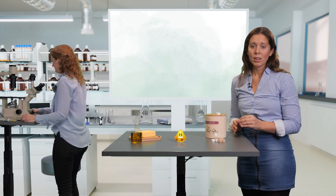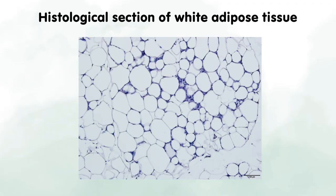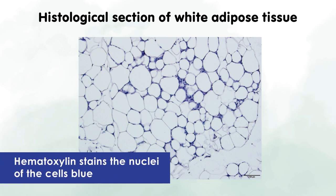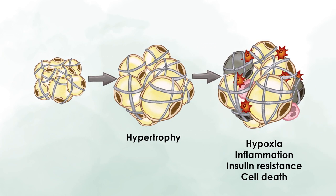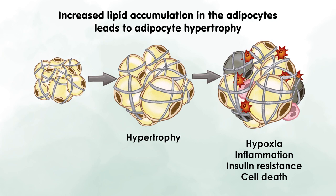Let's take a look at a histological slide of adipose tissue. We use a staining called hematoxylin and eosin. Hematoxylin stains the nuclei of cells blue, and eosin stains the cytoplasm in a red or pinkish color. Even though it looks like there are only adipocytes because they are so big, there is also a blue signal from the other cells. In the image on the right, you can see that increased lipid accumulation in adipocytes during obesity leads to adipocyte hypertrophy — the filling up of cells with lipids. Fibrosis also develops, which is the deposition of collagen around the cells, making them very rigid.